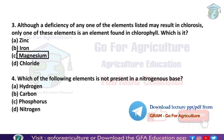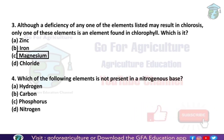Next question: which of the following elements is not present in the nitrogenous base? The nitrogenous base has three components: carbon, hydrogen, and nitrogen. The options are hydrogen, carbon, phosphorus, and nitrogen. Since hydrogen, carbon, and nitrogen are present in the nitrogenous base, the answer is phosphorus — phosphorus is not present in the nitrogenous base.